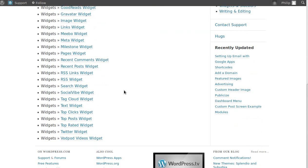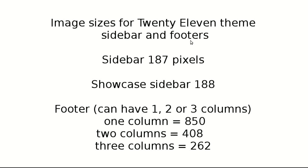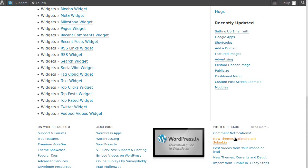Now if you put images in the sidebar — or the footer, which works in the same way as the sidebar but is at the bottom of your page — in the sidebar the images want to be 187 pixels wide. If they're wider than that, WordPress will shrink it as best it can. There's also a special sidebar called the Showcase Sidebar where it's 188 pixels instead. For footers, you can have a one-column, two-column, or three-column footer, and on the theme we're using there are only three columns.